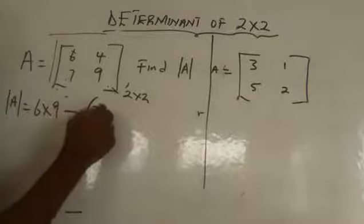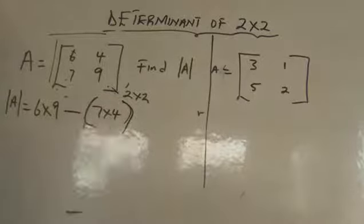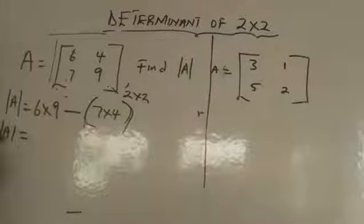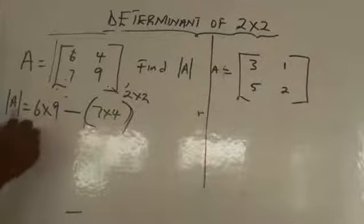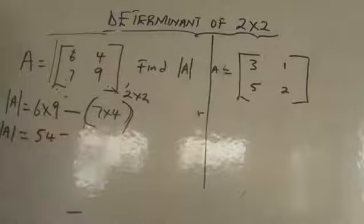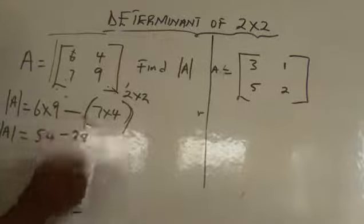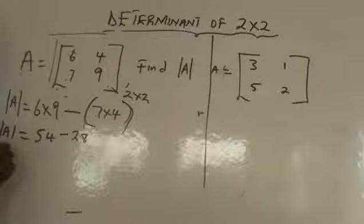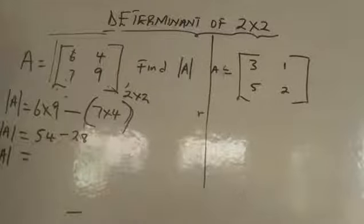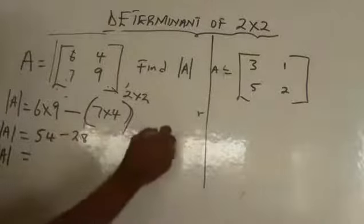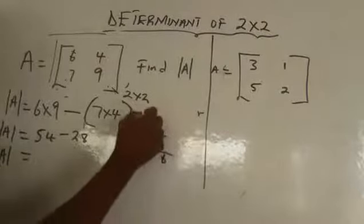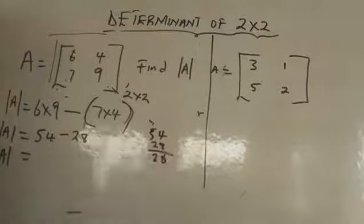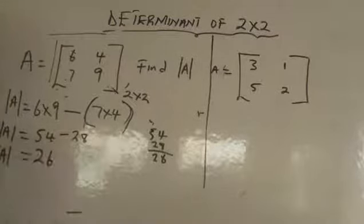When you do this, what are you going to have? Our determinant equals 6 times 9. Don't forget this is the sign of determinant. 6 times 9 is 54. Minus 7 times 4 is 28. So our determinant is 54 minus 28. 54 minus 28, this will give you 26. So your answer determinant is 26.